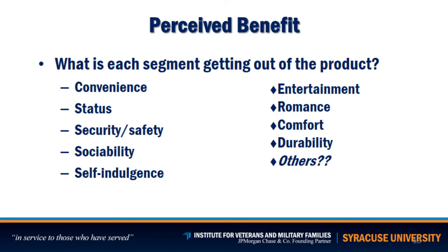Another variable is perceived benefit. It doesn't mean you should only use one variable — you can use all of them together, and the more you know the better. In terms of perceived value, ask what each segment is getting out of the product: is it convenience, status, security, safety, sociability, self-indulgence, entertainment, romance, comfort, or durability? You want to identify potential benefits and also see who the customers are that are buying from competition, to understand what they perceive as benefits and how you can create matching value in your business.